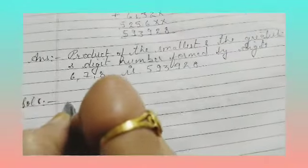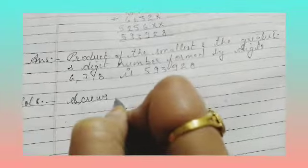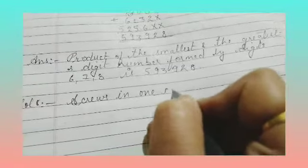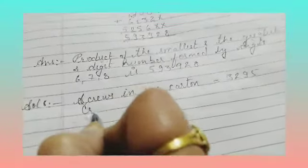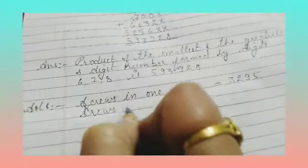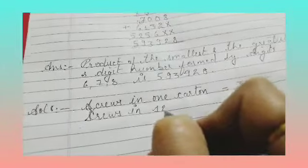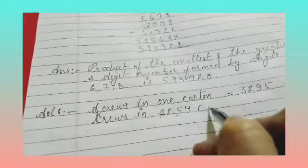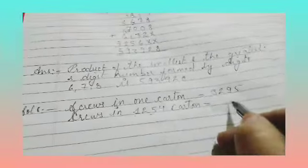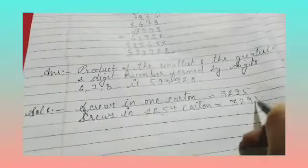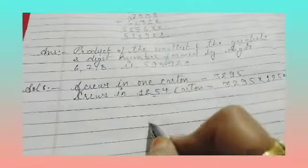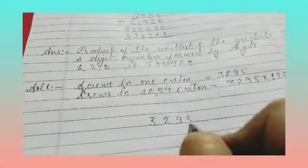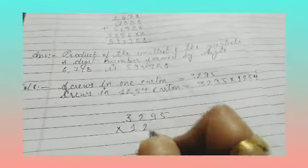So let's do: how many screws are there in one carton? 3,295. Screws in 1,254 cartons, how many screws should it be? 3,295 multiplied by 1,254. Okay children, multiply 3,295 into 1,254.